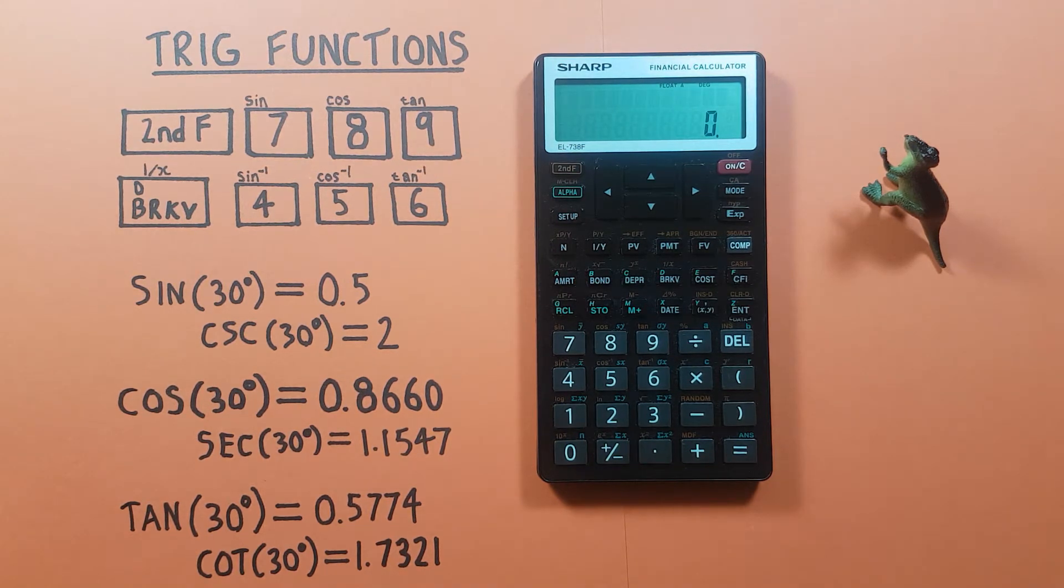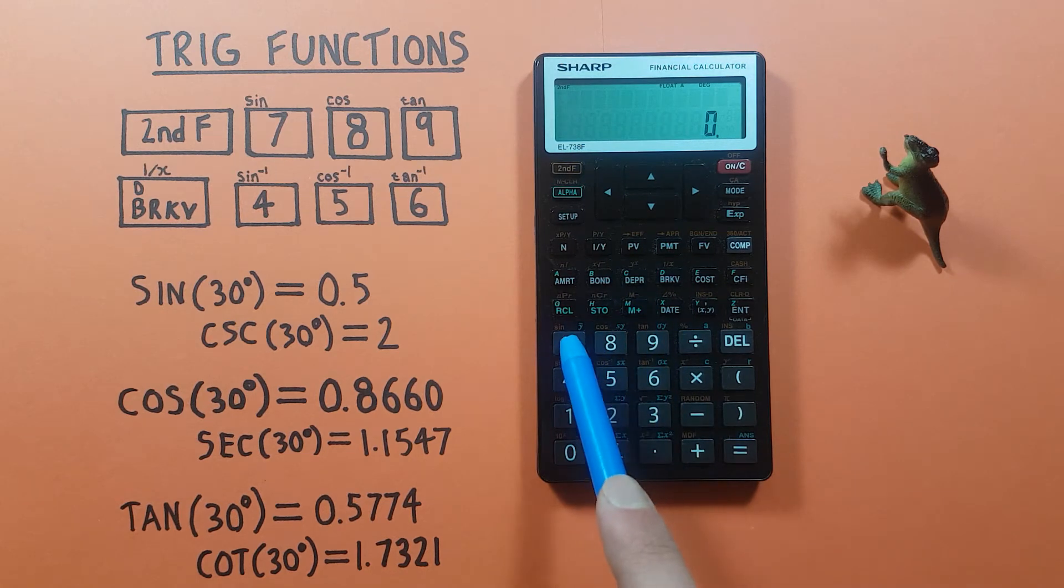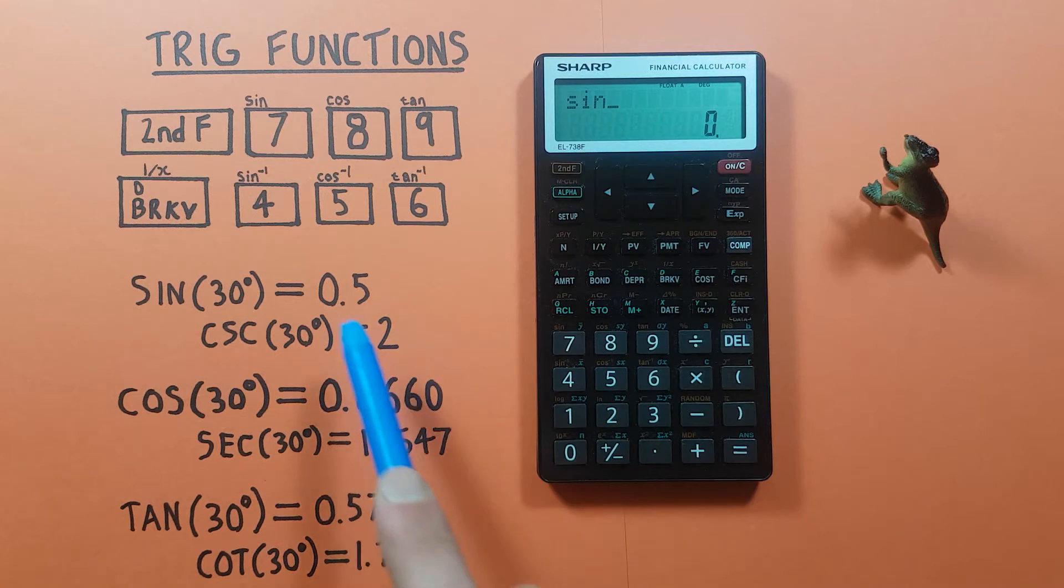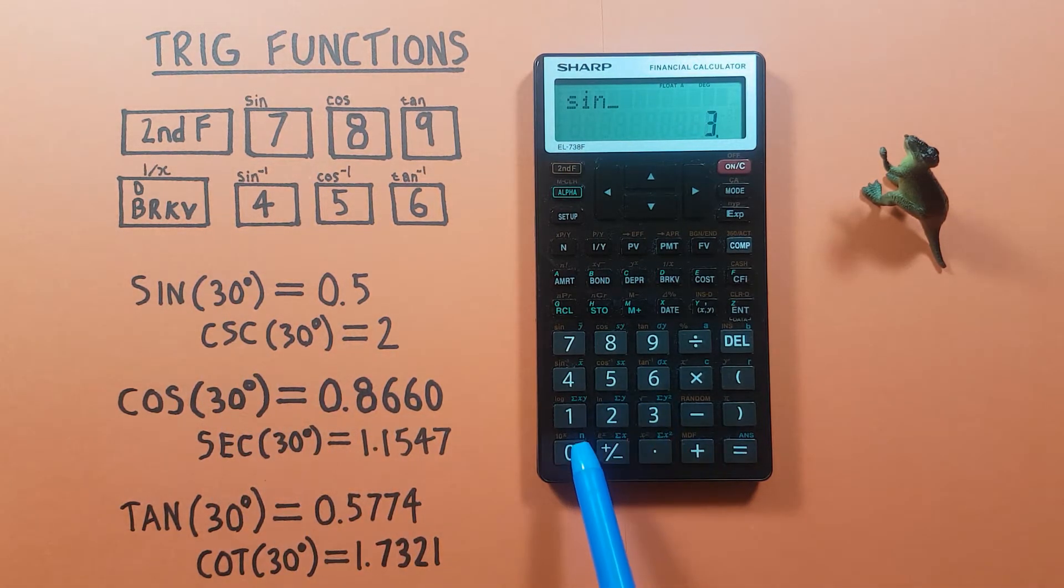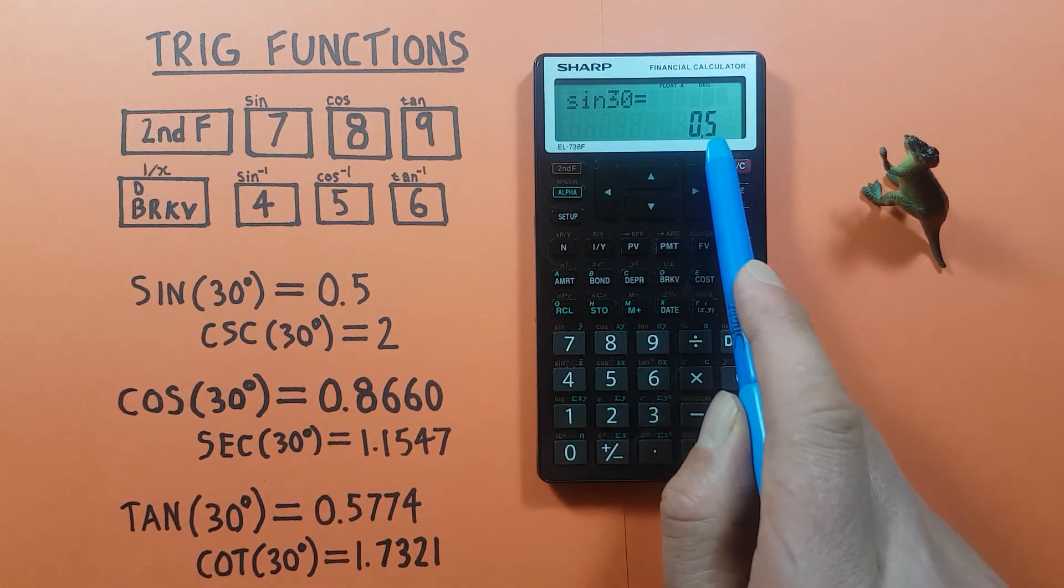Now if you want to do something basic like the sine of 30 degrees, first we turn on sine so we go second function and then seven for sine. We'll see it at the top of the screen here, and then our 30 degrees and hit equals, and we see that sine of 30 degrees is 0.5.